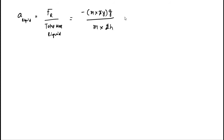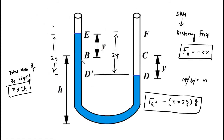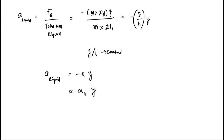So the acceleration of the liquid column equals −(G/H)·y. Here, G/H is a constant. We can write acceleration = −K·y, where K = G/H. This means the acceleration is directly proportional to the displacement y of the liquid but acts in the opposite direction, as indicated by the negative sign. Therefore, this oscillatory movement is confirmed to be an example of simple harmonic motion.